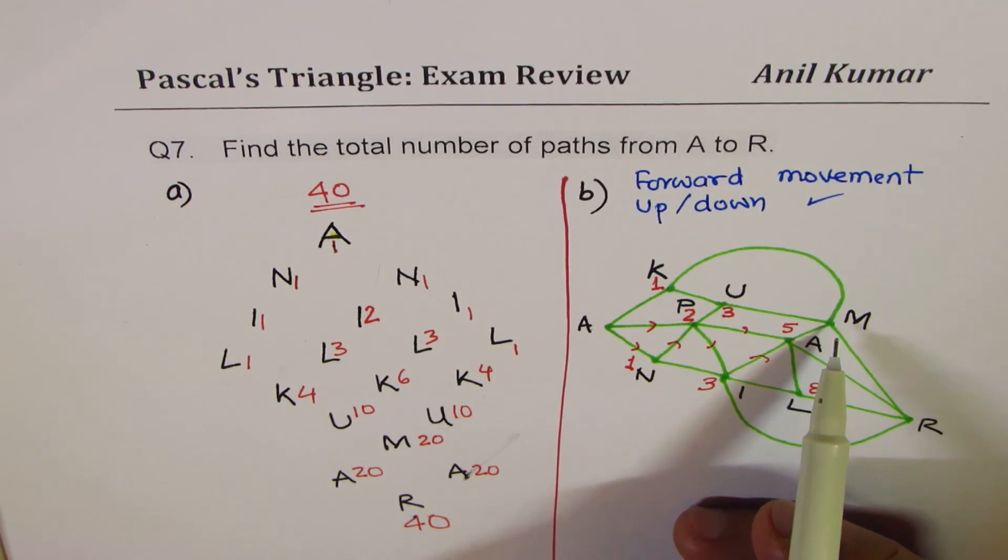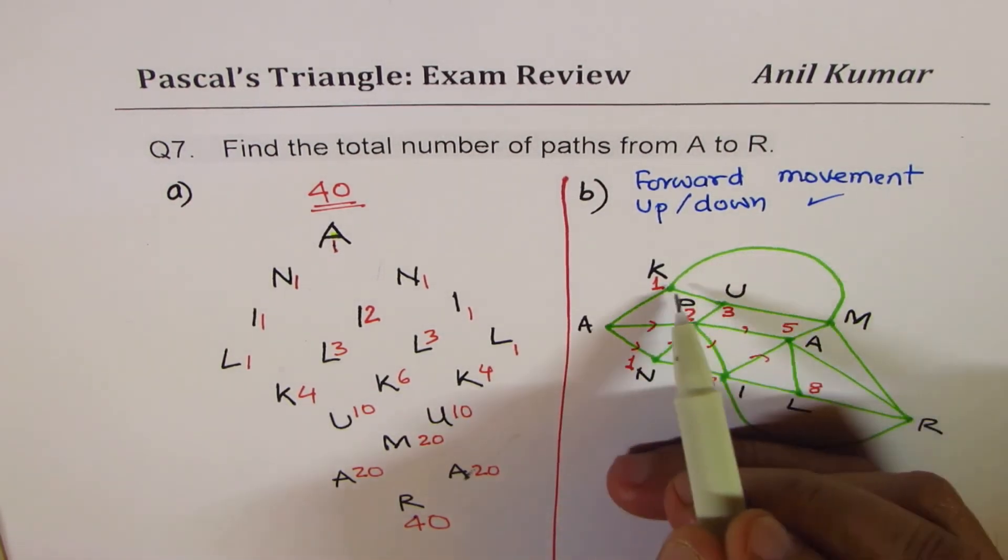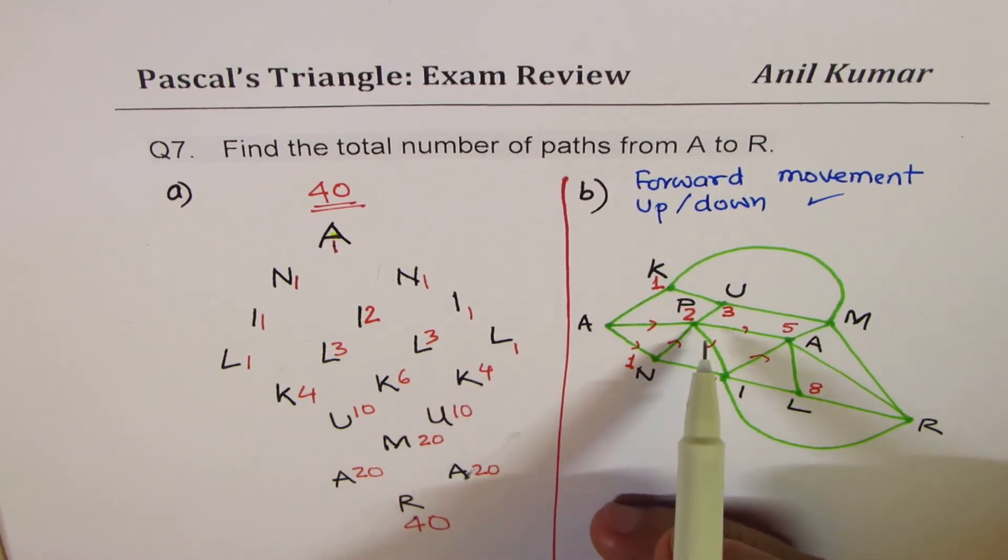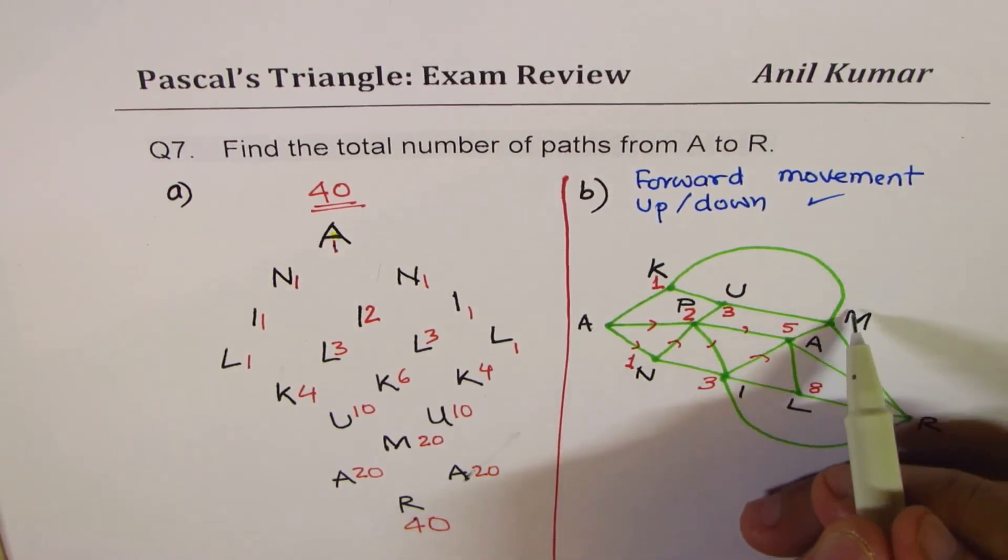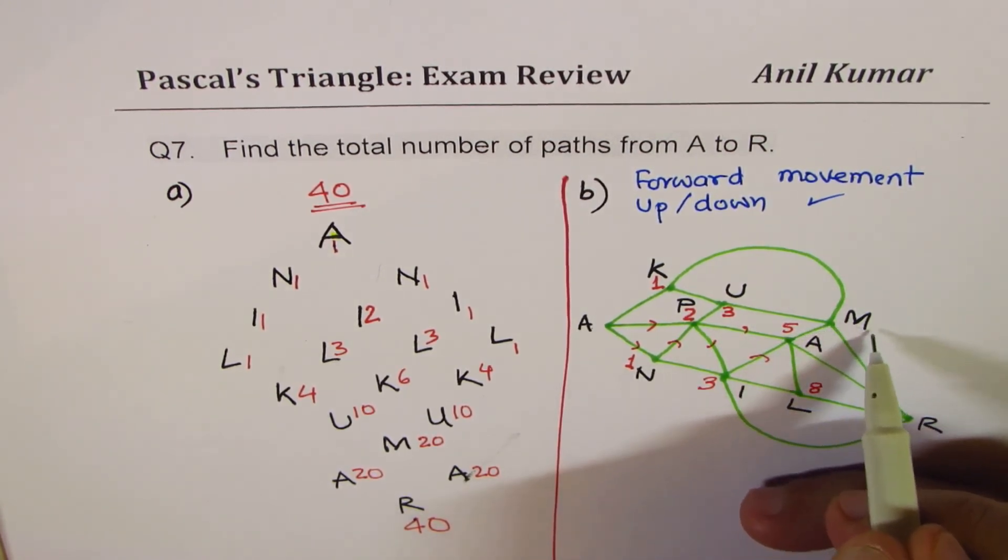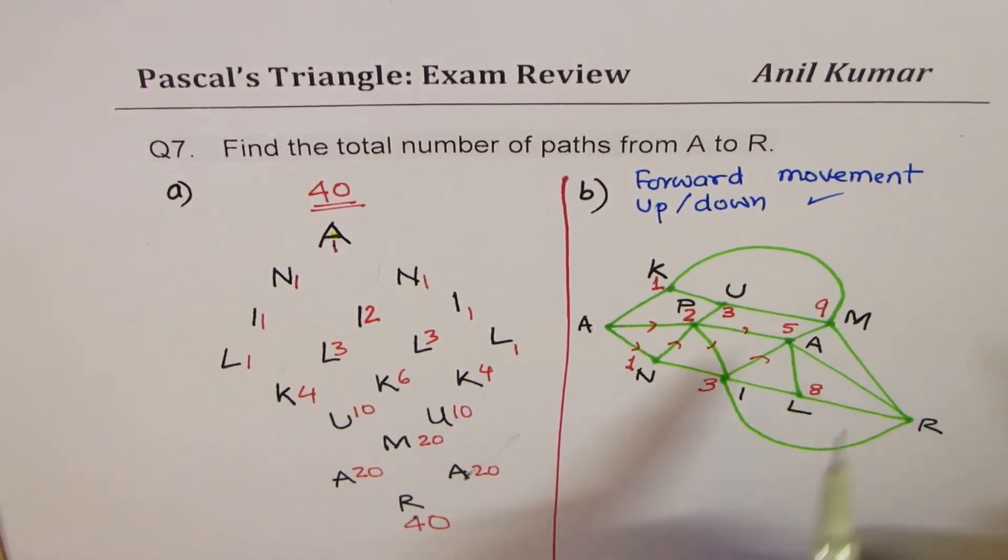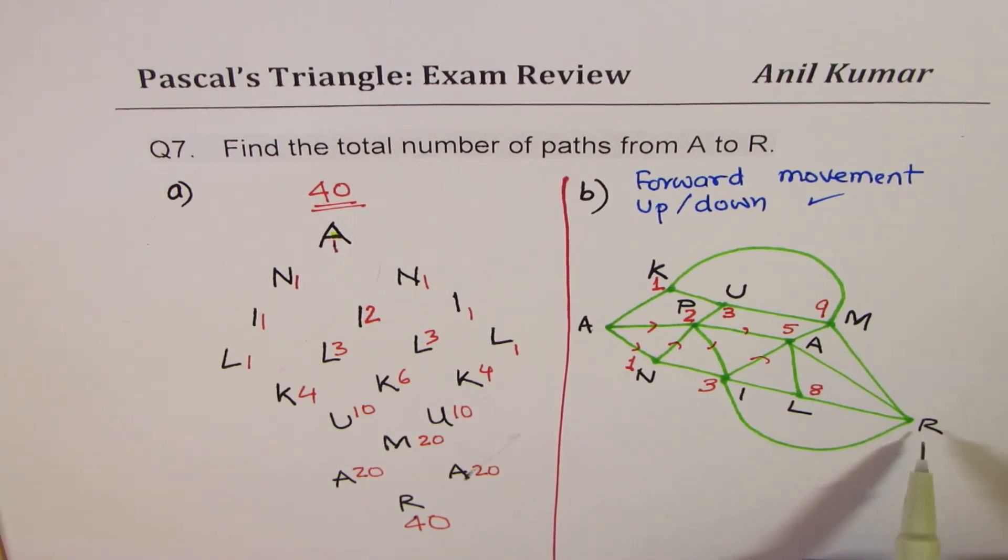Let's get the value of M. Now, how many ways to reach at M? Remember, there is a path going like this also. So this is 1 here. So 1 plus, we could come straight from here. So that is 3. 1 plus 3 is 4, and then 5. So there are nine ways of reaching this position. Let me write 9 here. So nine ways, five ways, eight ways.